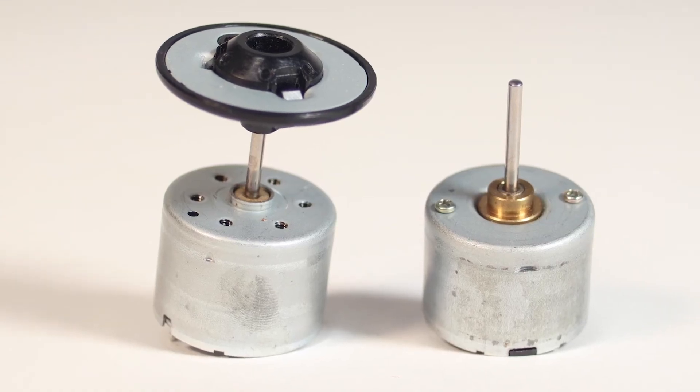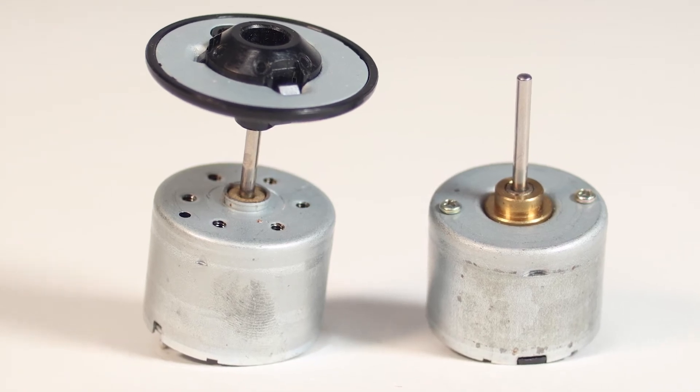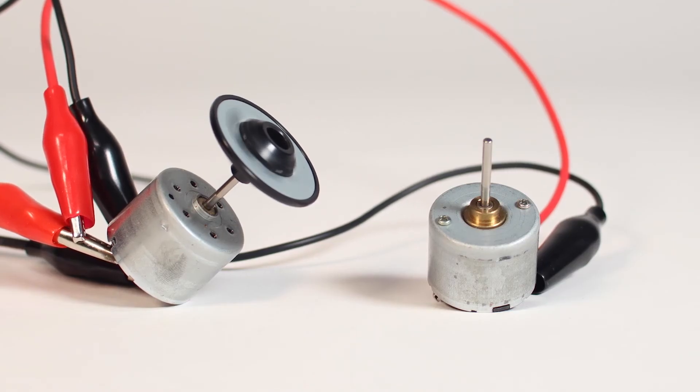Motors have a metal shaft in the middle that spins. That's what makes motors useful and is used to make other things spin or move. However, that shaft is usually very balanced and spins smoothly.